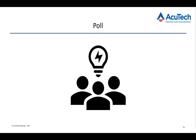Now we have a poll question. The question is: what type of siting study have you all performed? Have you performed a consequence or a risk-based siting study? This does vary around the world — it varies based on preference and based on regulation. If you haven't performed a siting study, is that something you plan to do or don't think is necessary?